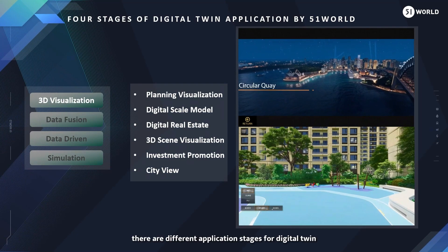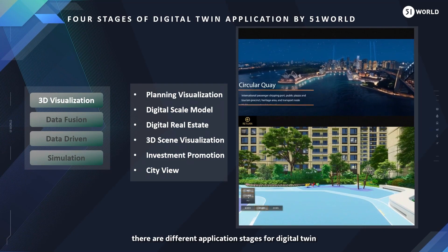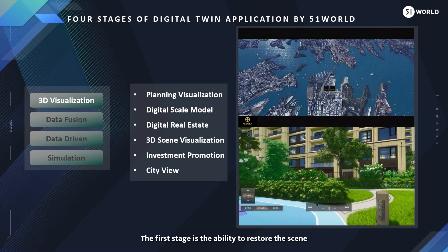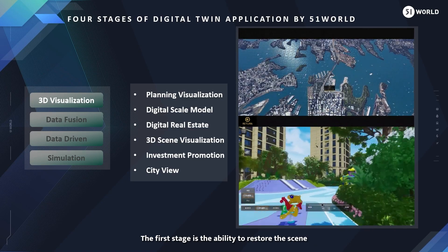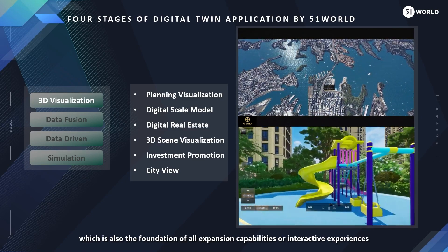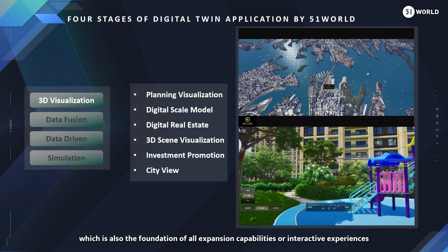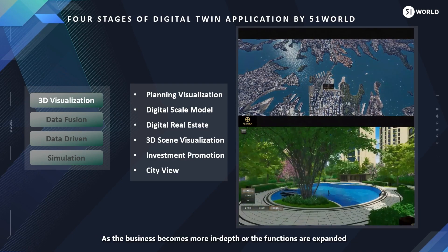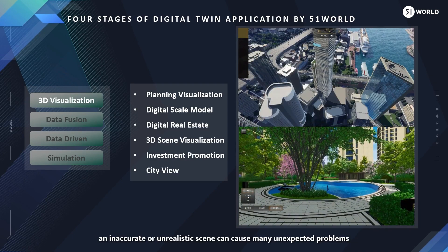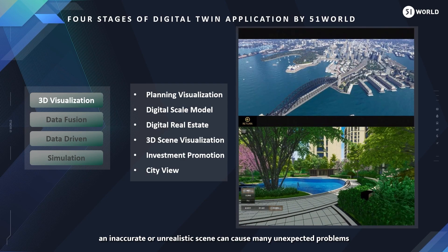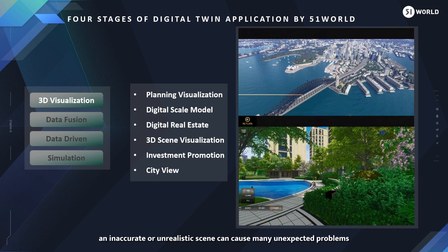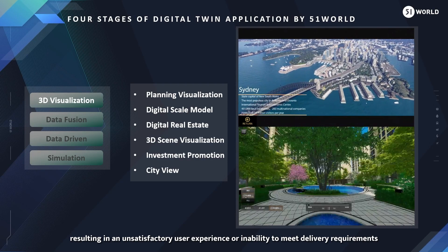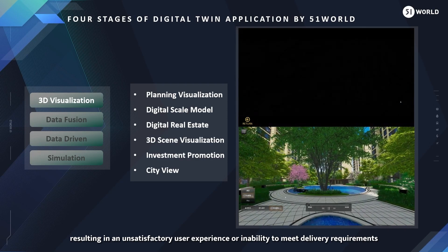According to 51World, there are different application stages for digital twin. The first stage is the ability to restore the scene, which is also the foundation of all expansion capabilities or interactive experiences. As the business becomes more in-depth or the functions are expanded, an inaccurate or unrealistic scene can cause many unexpected problems, resulting in an unsatisfactory user experience or inability to meet delivery requirements.